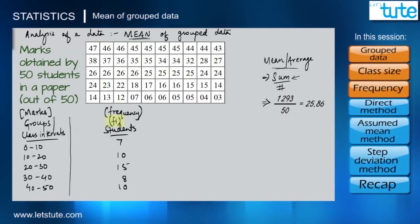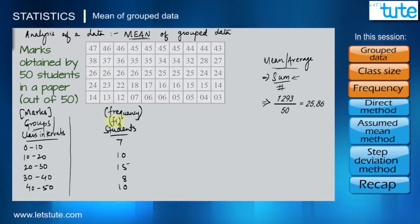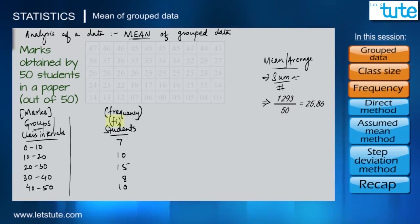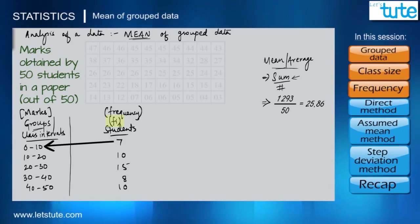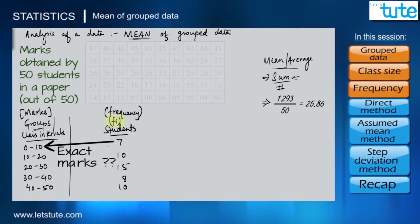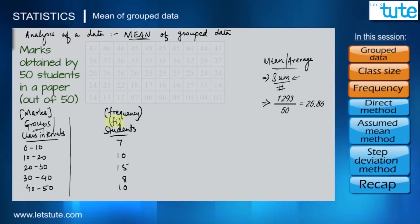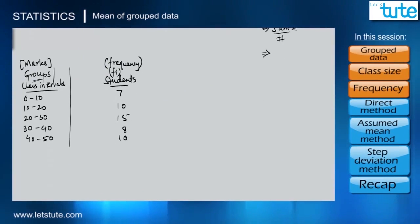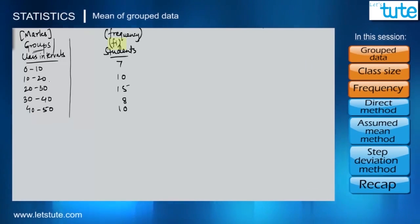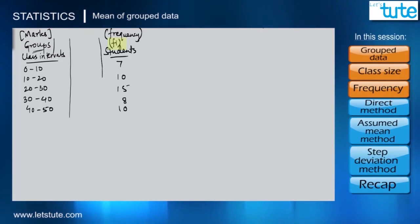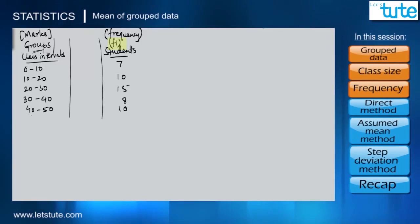There is one disadvantage when working with grouped data. Looking at the grouped data, we can only know the range of marks secured by students — for example, seven students secured 0 to 10 marks, but we don't know the exact marks for each of them. Some information is lost with grouped data. If we are only given this grouped data without the raw data, we need to estimate the mean from it.